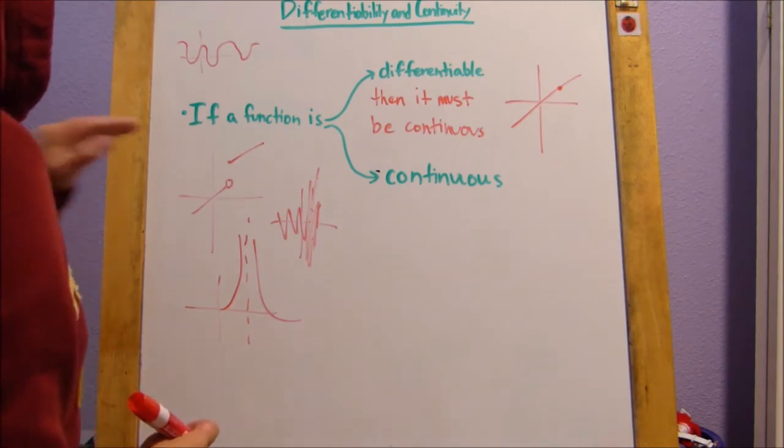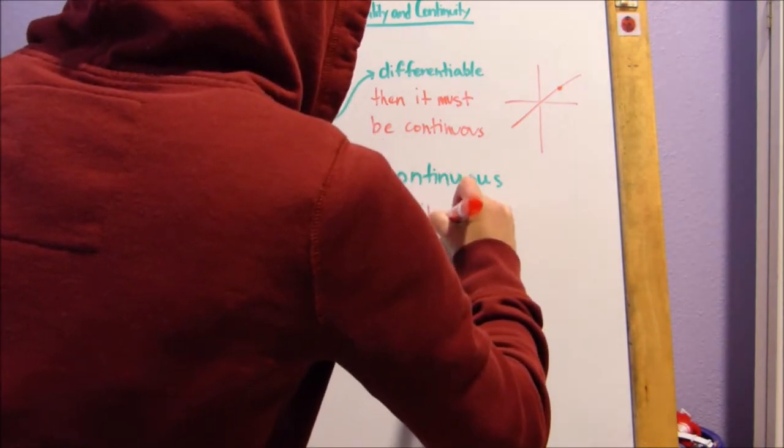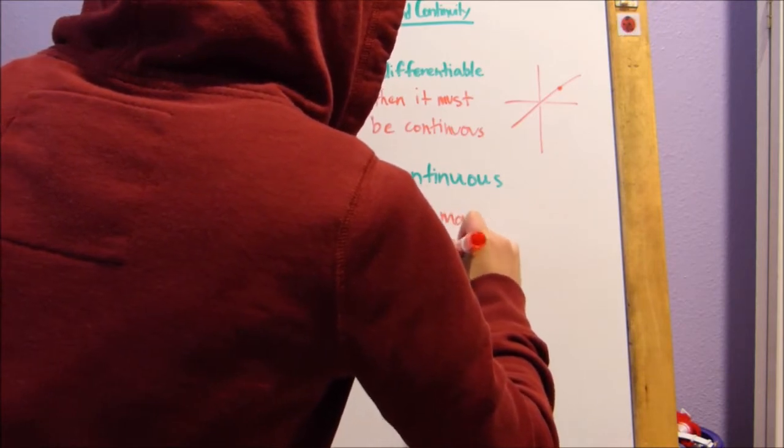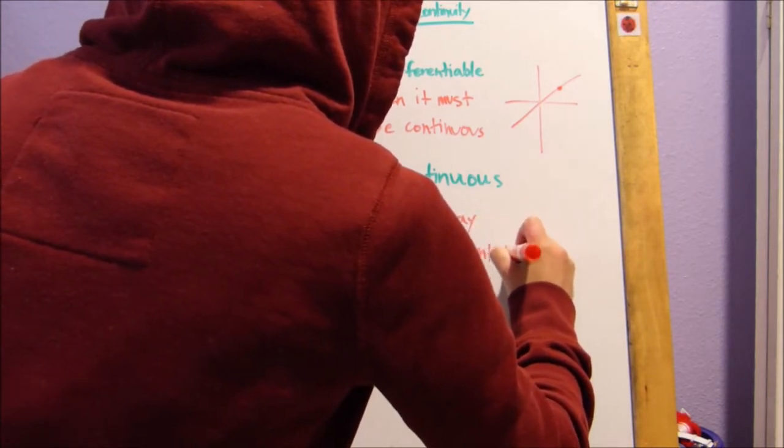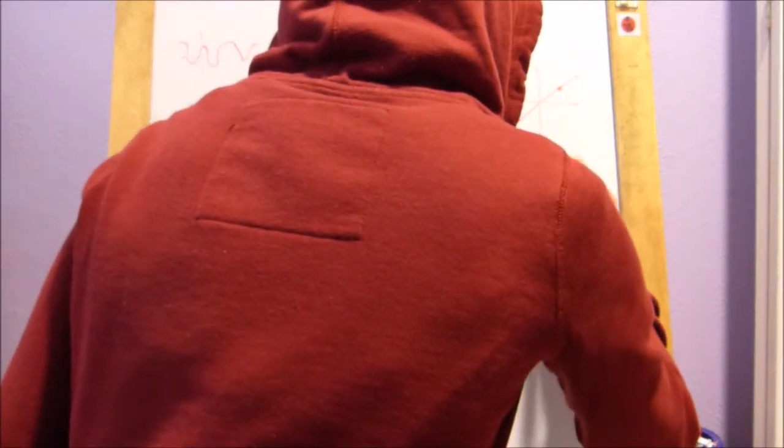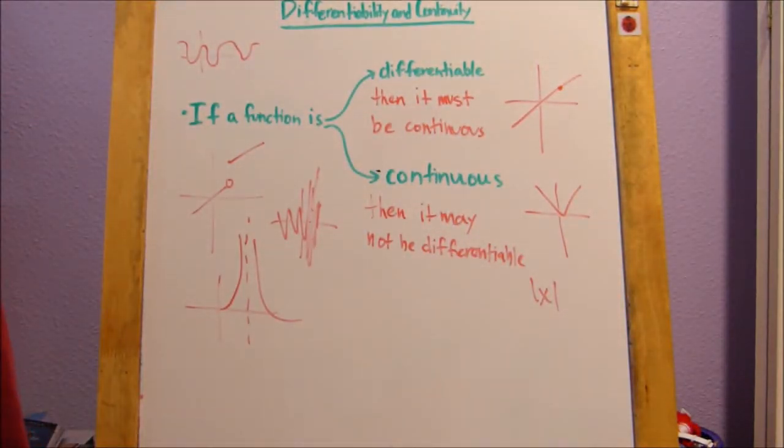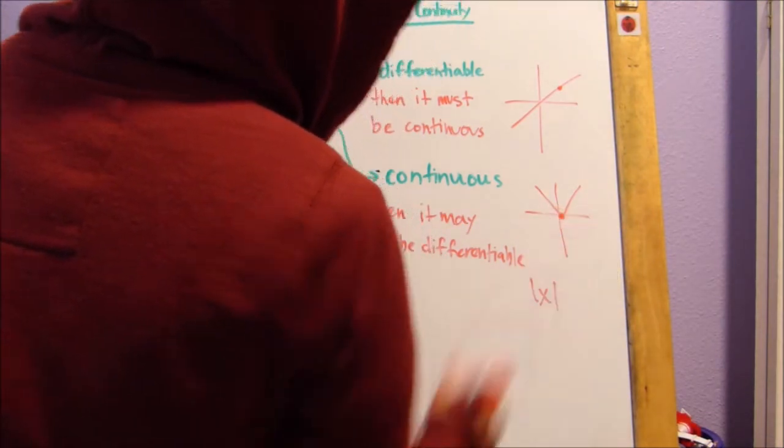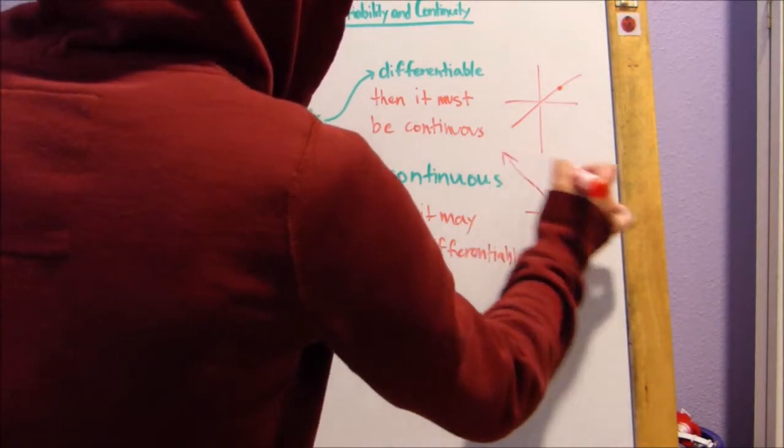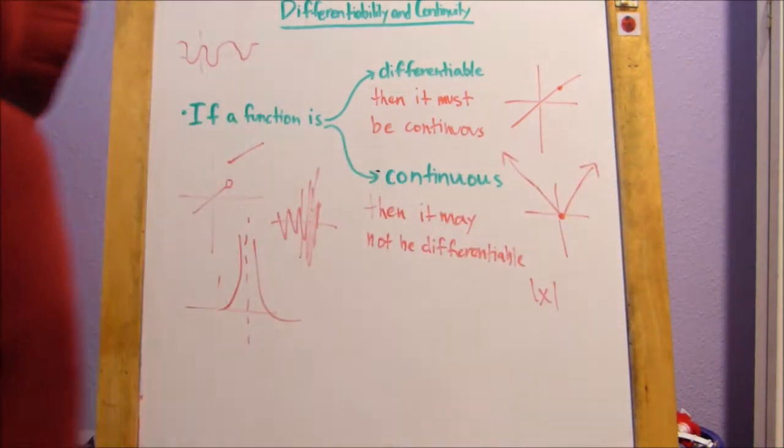All right, and then the second rule is if a function is continuous, then it may not be differentiable. Right? So, an example of this is if we were to draw out a graph. The absolute value of x, right? So, if we were to say that we're trying to find the derivative of this spot, we see that the absolute value of x is continuous everywhere, right? It just keeps going up this way and this way, and you can draw the entire graph without picking up your pencil.